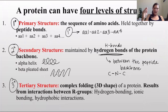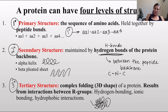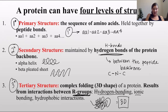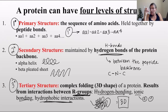The tertiary structure is really the three-dimensional shape. You might have an alpha helix, then some beta sheets, then more structure that folds back on itself - this is the full three-dimensional shape of a protein. Tertiary structure results not from the backbone but from interactions of the R groups. These interactions can include hydrogen bonding, ionic bonding (positive and negative amino acids coming together), and hydrophobic interactions where hydrophobic amino acids cluster together to get away from the watery environment.